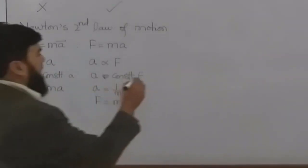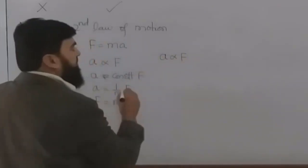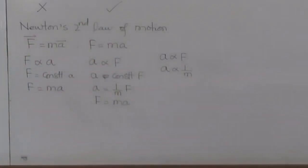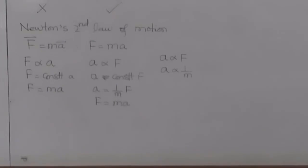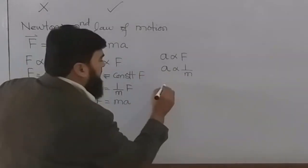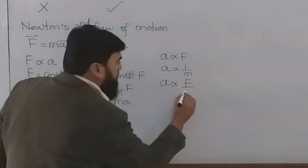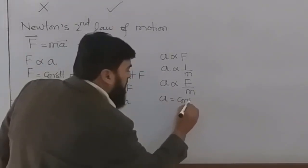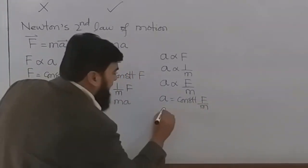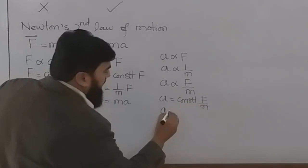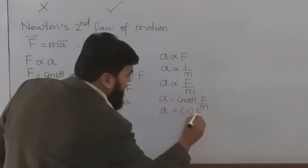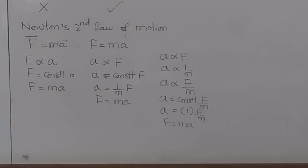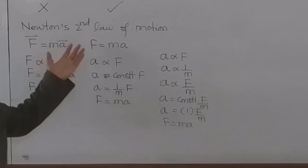There is another way: write A is proportional to F, and A is proportional to 1 over M. Combining the two proportionalities gives A proportional to F over M. Then A equals a constant times F over M, and this constant equals 1. This makes our equation F equals MA. What is the right way to write all of this?